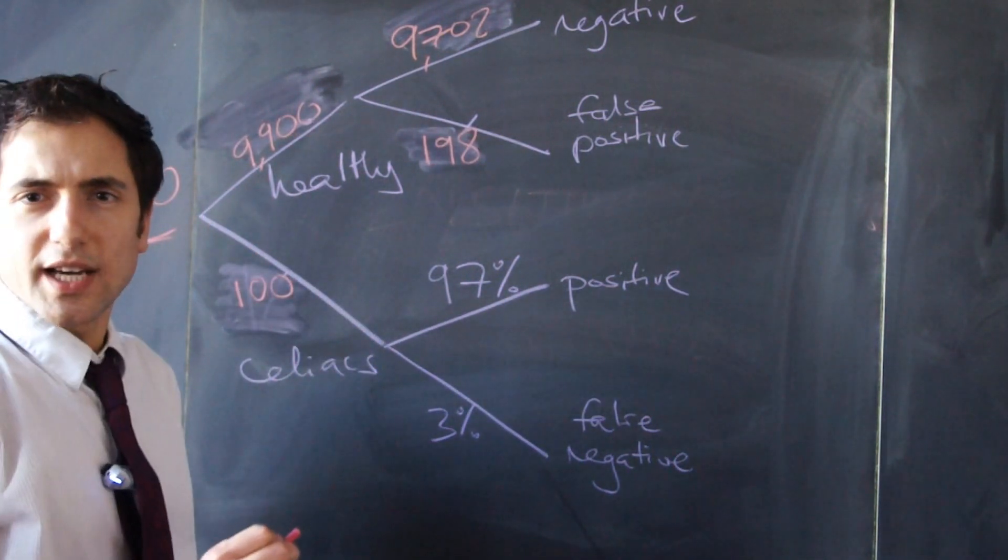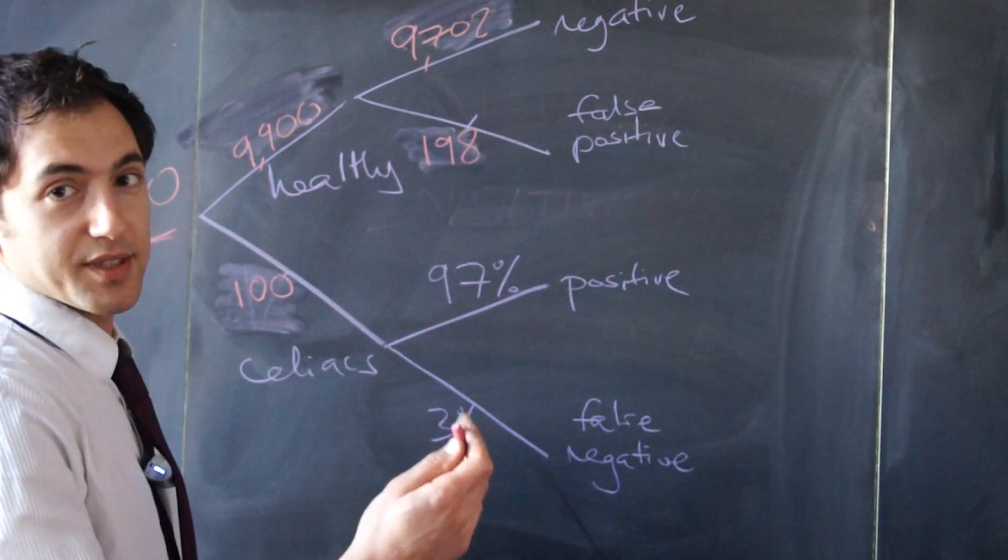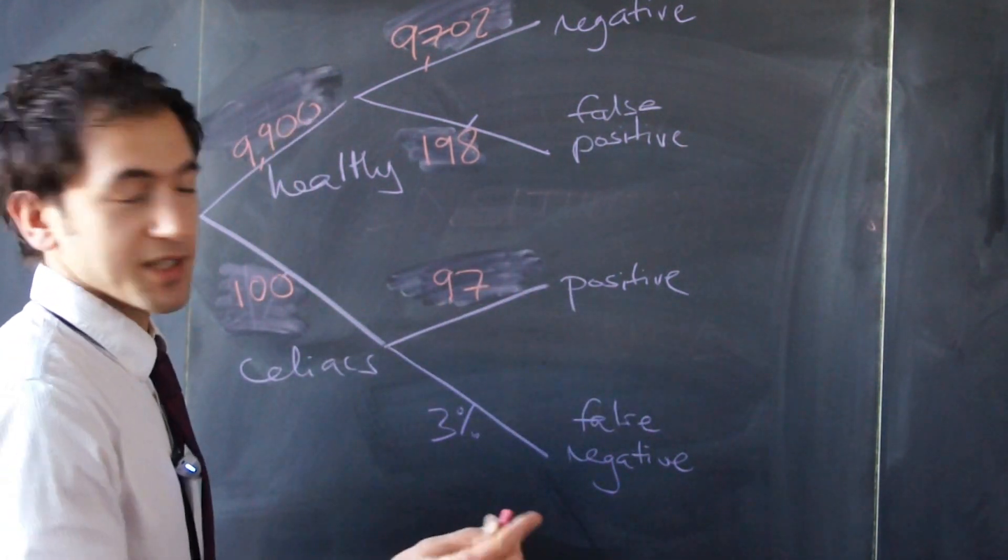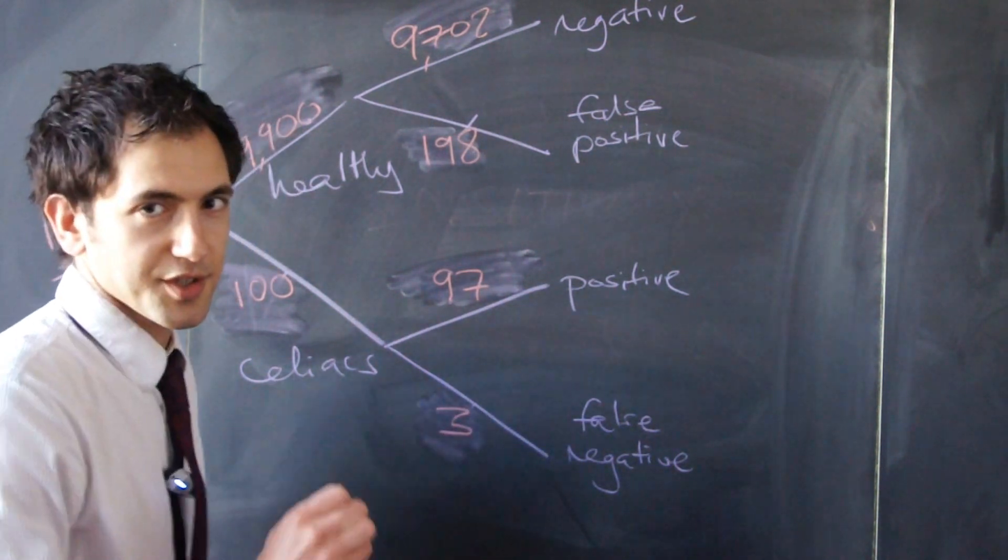What about the 100 celiacs? 97% of them would test positive—that's 97 people. And 3% would come up as false negatives—that's just 3.